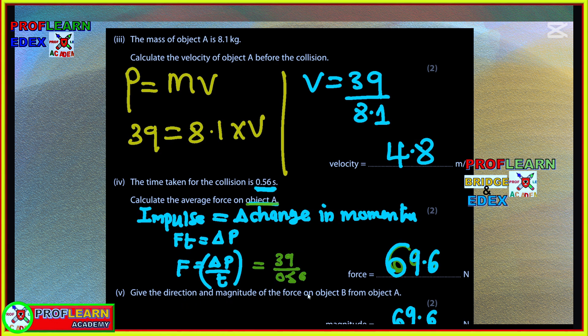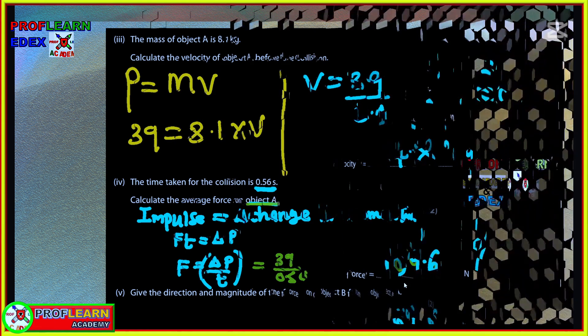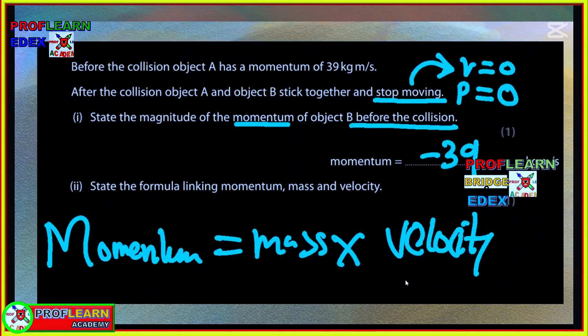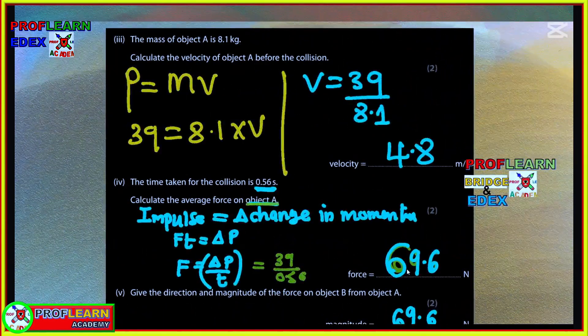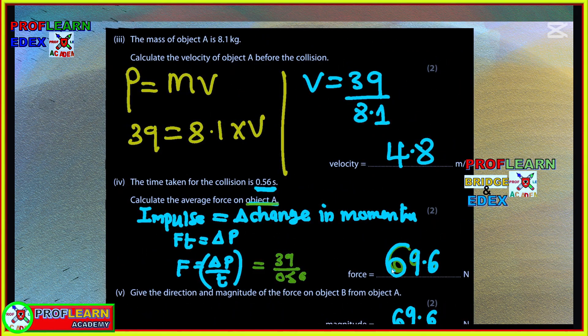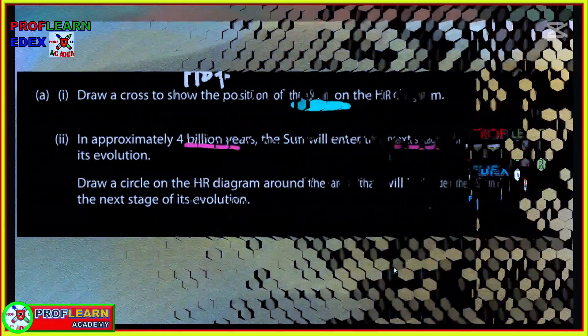Give the direction and magnitude of force B from A. Remember according to Newton's third law of motion, for every action there is equal and opposite reaction. If the force is 69.6, the force of B will be 69.6 as well, but the direction will be to the right. If you are new to ProfLearn YouTube channel, consider subscribing so that when I upload another tutorial you will be notified.